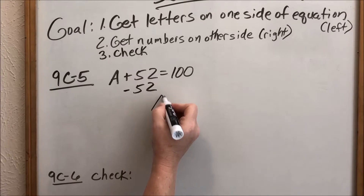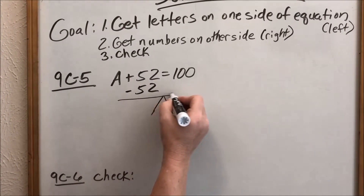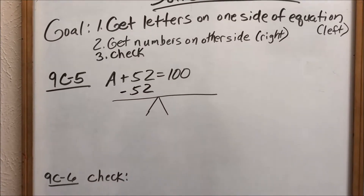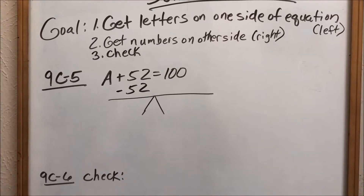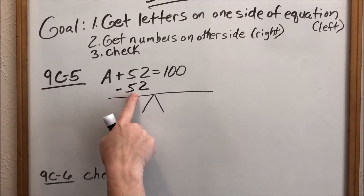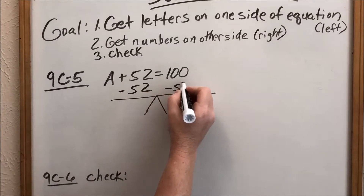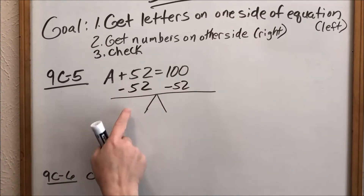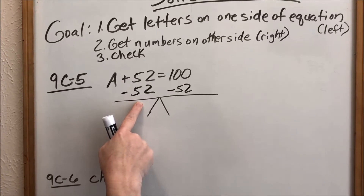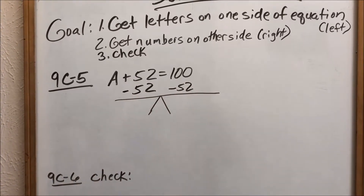The equal sign is like balancing a seesaw right around the equal sign. I want to balance this seesaw. So if I subtract 52 from here, I have to subtract 52 from here. It's like if I take away 52 rocks on one side of the seesaw, I have to take away 52 rocks on the other side.